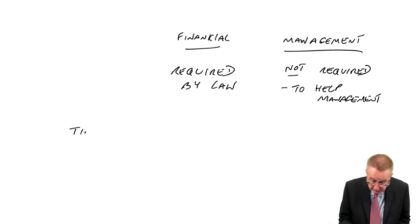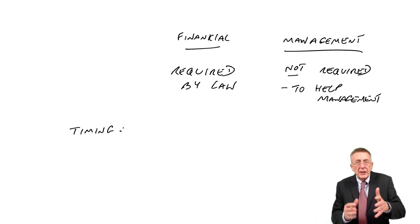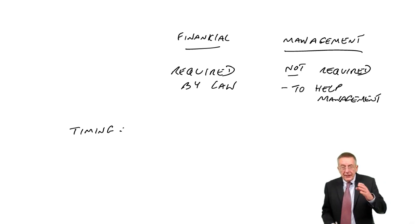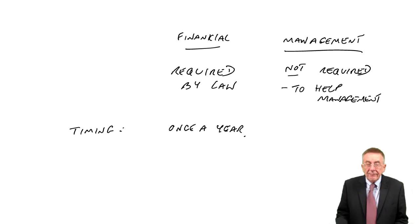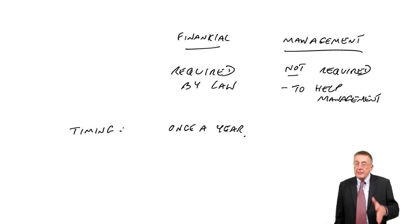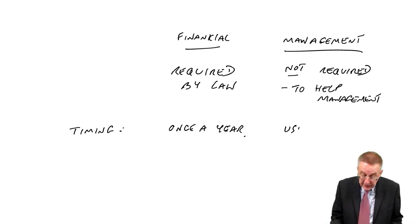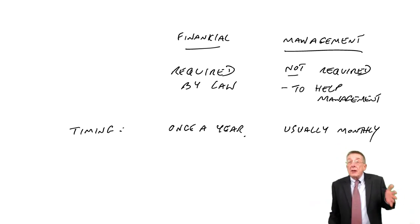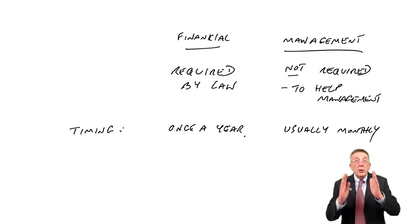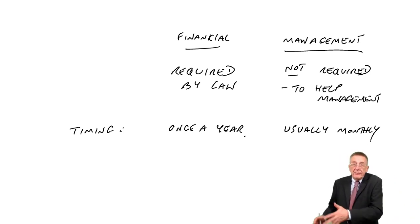On the timing: financial accounts have to be produced at least once a year. Management accounts have no laws involved — they do it whenever they want, and in practice they usually produce profit statements monthly. There's no point waiting until the end of the year to find out it's been a dreadful year when it's too late to do anything. Normally the management accountant will produce profit statements every month, so if something is going wrong in January, there's still time to put things right for the rest of the year.